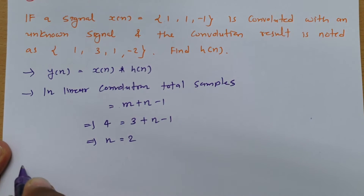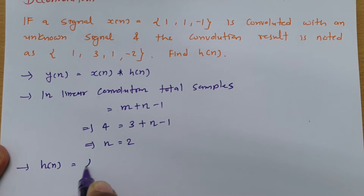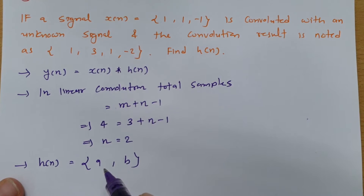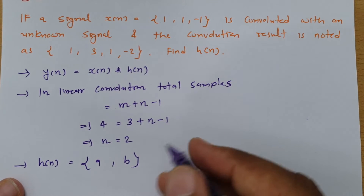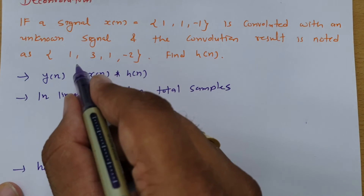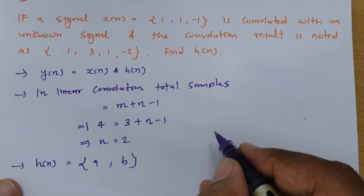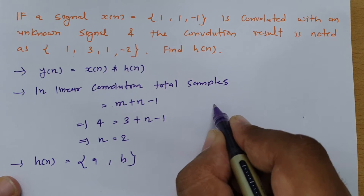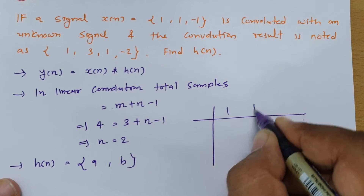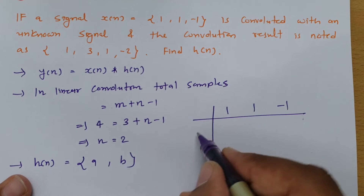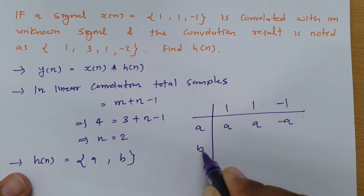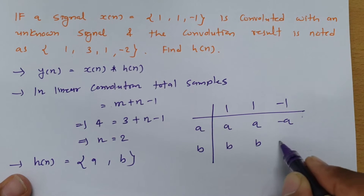So h of n is {a, b}, where a and b are the samples of h of n, and our aim is to identify the values of a and b. We know x of n is {1, 1, -1} and the resultant y of n is {1, 3, 1, -2}. Writing x of n as {1, 1, -1} and h of n as {a, b}, and multiplying: a×1=a, a×1=a, a×(-1)=-a, b×1=b, b×1=b, b×(-1)=-b.